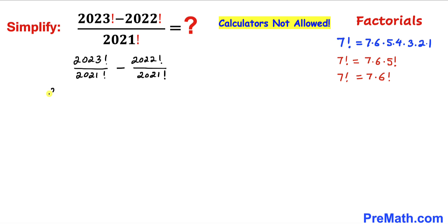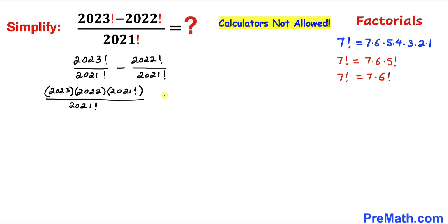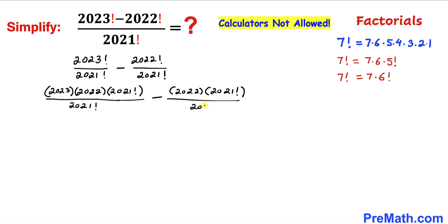In the numerator, 2023 factorial can be written as 2023 times 2022 times 2021 factorial, all divided by 2021 factorial. And then minus: 2022 factorial can be written as 2022 times 2021 factorial, all over 2021 factorial.